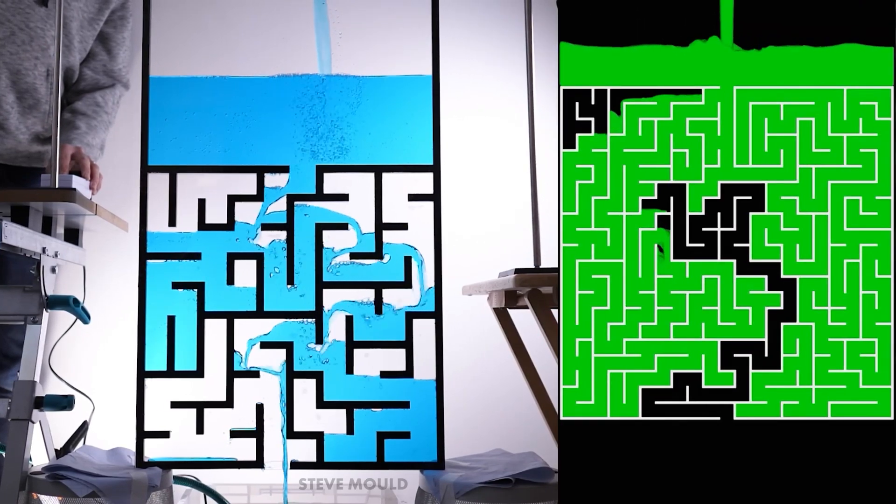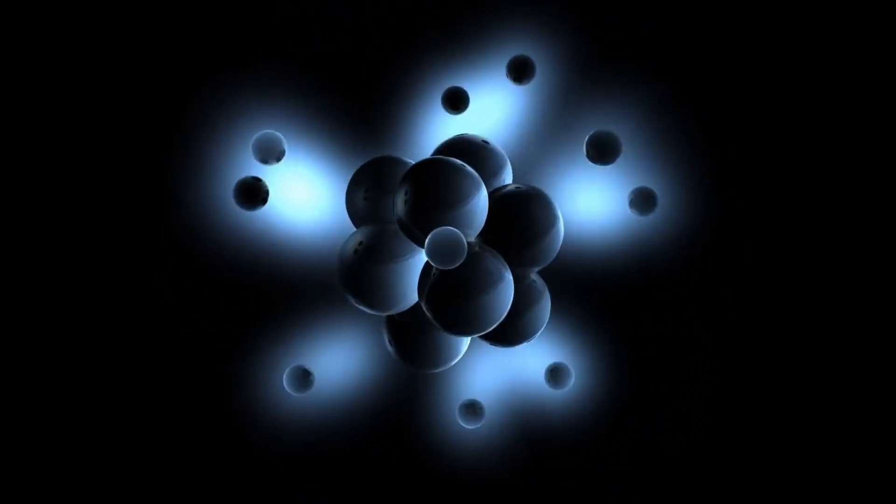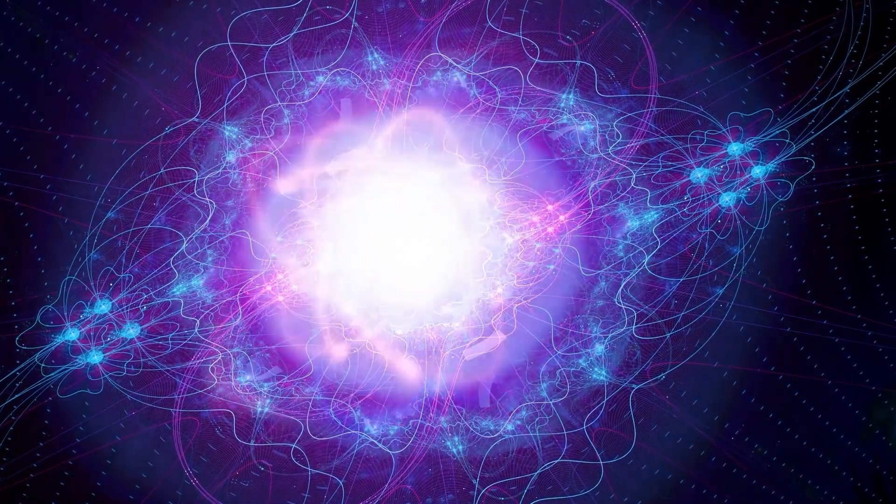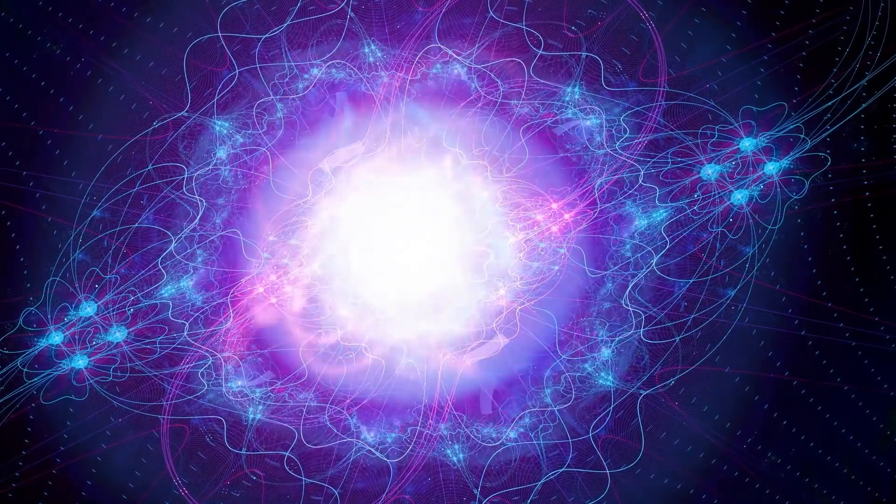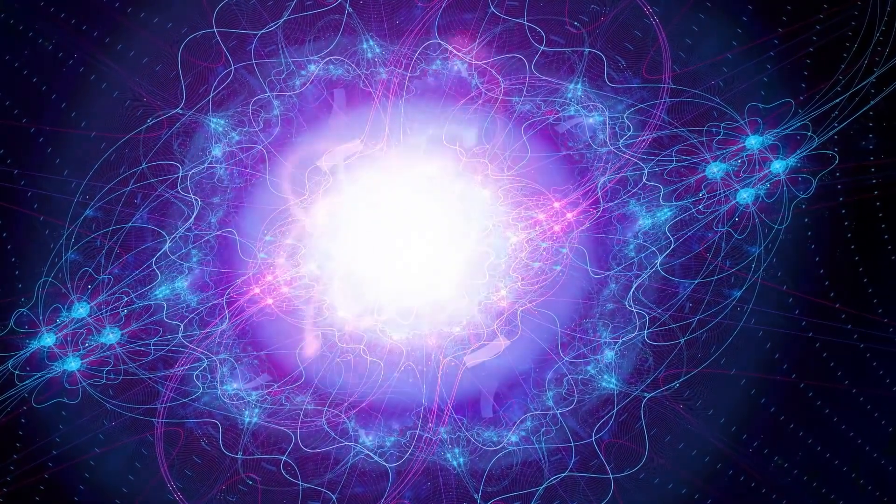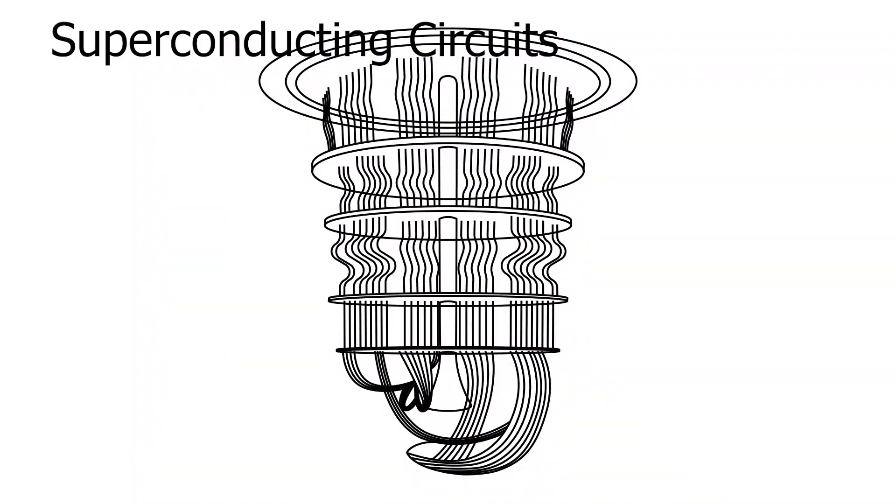Now let's get into some physics. Quantum mechanics is a scientific theory that helps us understand how tiny particles like atoms and subatomic particles behave. It also explains how we can use superposition and entanglement. Since we make our qubits out of quantum systems like neutral atoms, trapped ions, or superconducting circuits, we can use quantum mechanics to describe them.